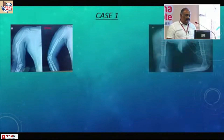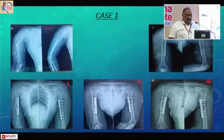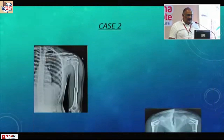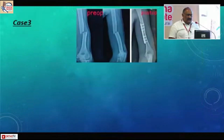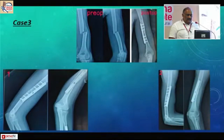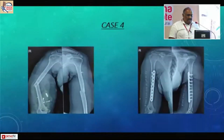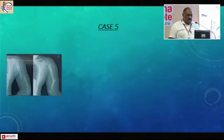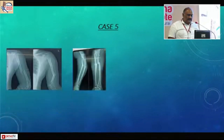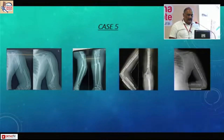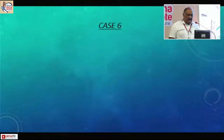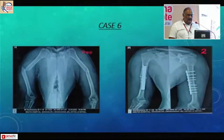Here are clinical examples of my anteromedial plating approach — easily convertible, we can extend up or down with easy access, and there is good union at follow-up. This is a floating-type elbow injury with a fracture shaft and both-bone forearm fracture showing excellent clinical results with the plate placed anteromedially. This is another elderly male fixed with anteromedial plating along with lag screws.